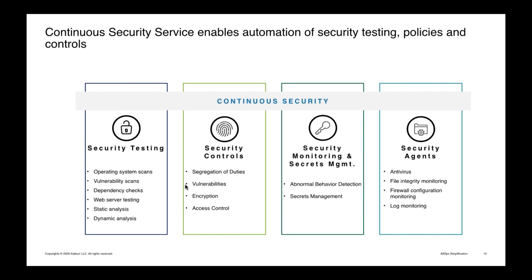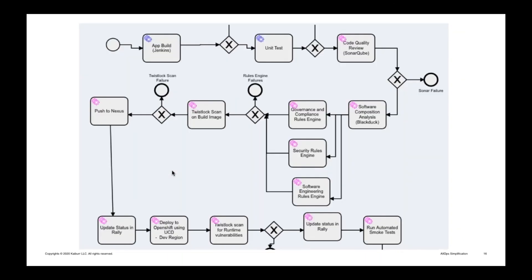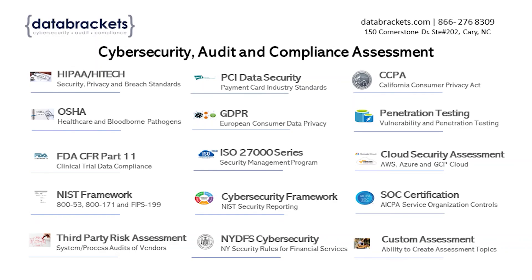The fourth key pillar is security agents — software installed on every device to ensure it is constantly monitored and evaluated for potential threats. This includes antivirus, file integrity monitoring, firewall monitoring, and so forth. Those are the core pillars you need to think about when solving for security. For more information, click the link below or visit databrackets.com.